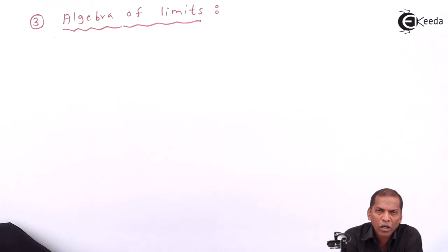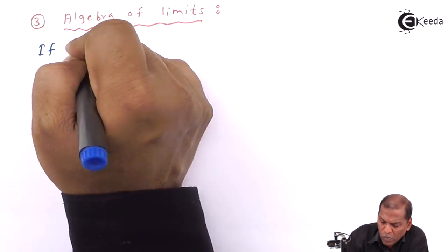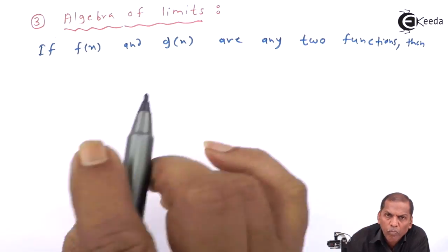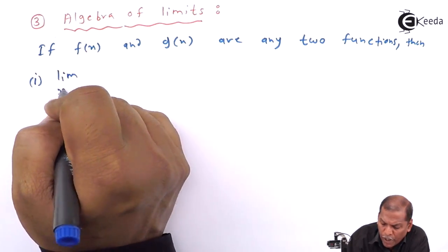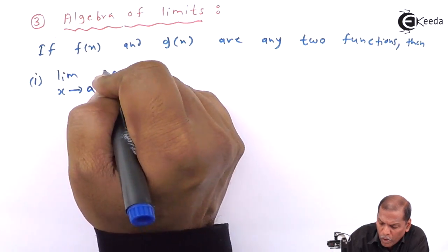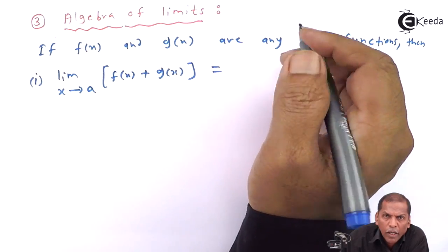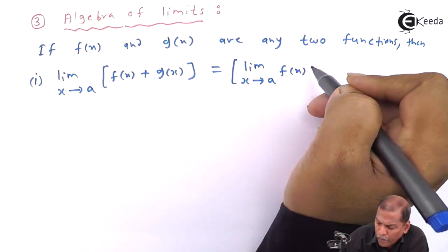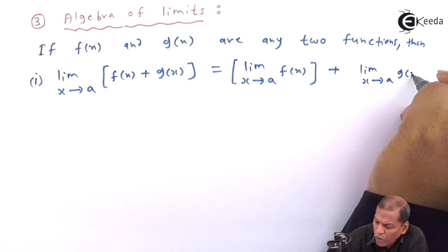Hello friends. Now we see the topic that is Algebra of Limits, of the chapter Limits. Formula number one: limit x tends to a of [f(x) + g(x)] is equal to limit x tends to a of f(x) plus limit x tends to a of g(x).